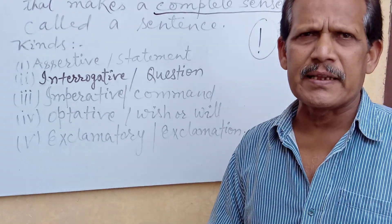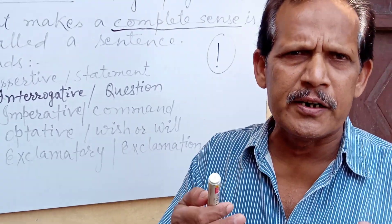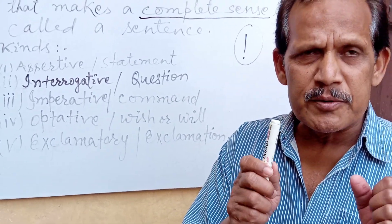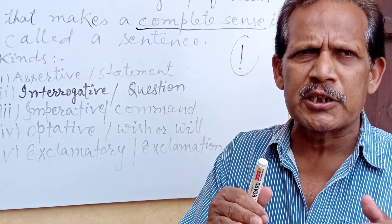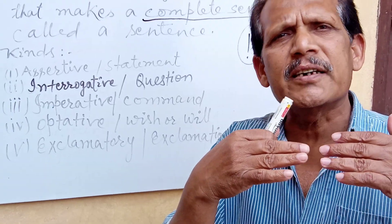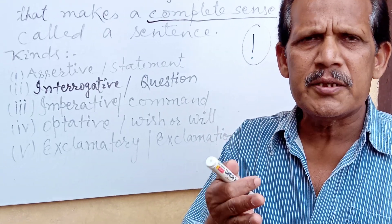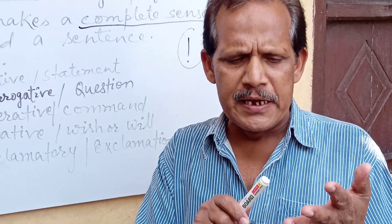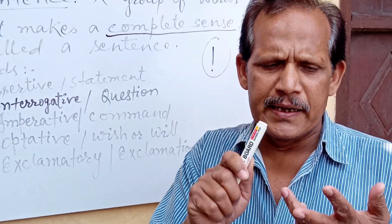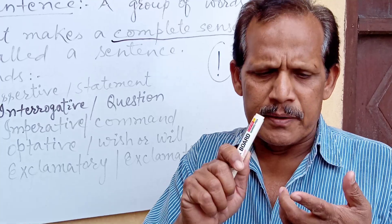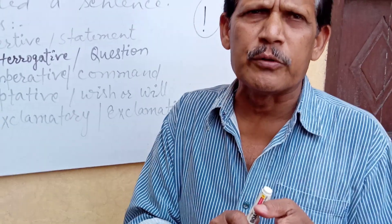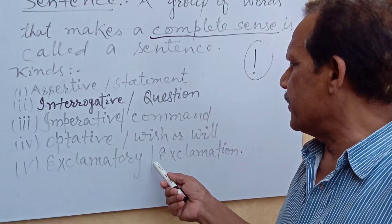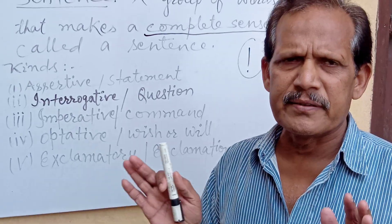Exclamatory sentences show exclamation — the sudden and strong feeling of your heart — which causes the sentence to come spontaneously through your tongue. You do not make an effort to say it; it comes out on its own. The feeling may be of fear, love, disgust, surprise, happiness — any type of feeling. Such sentences are called exclamatory sentences.